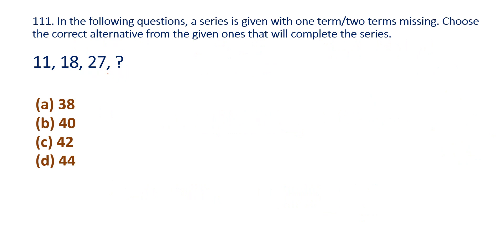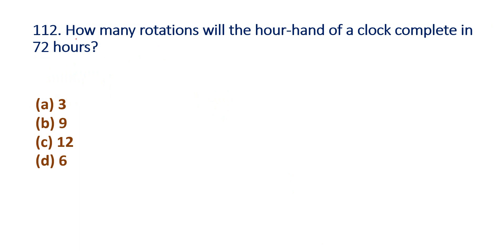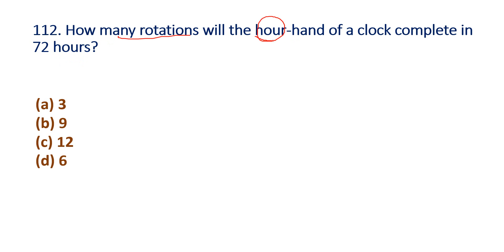Here is the question. We will tell you the difference. How many rotations will the hour hand of a clock complete in 72 hours? First, one rotation is complete.